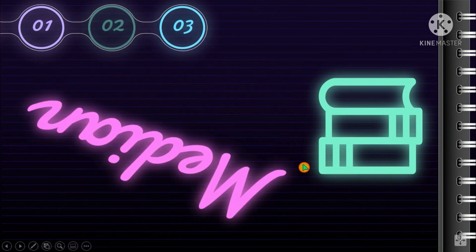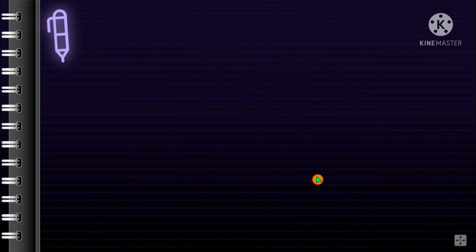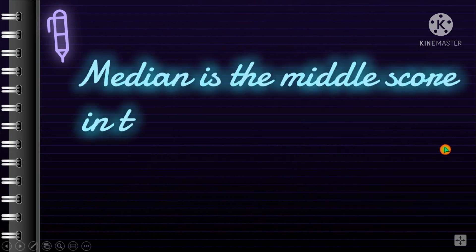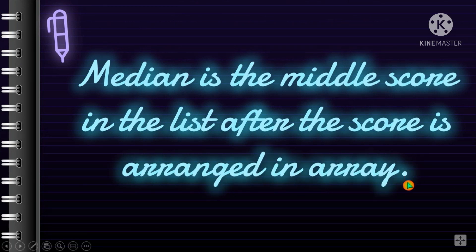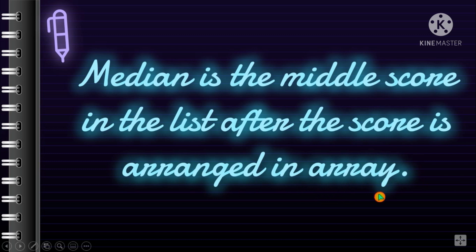Next, let's talk about the median. The median is the middle score in a list after the scores are arranged in array form. Array means you have to arrange your raw data in ascending or descending order. Before finding the median, your data must be arranged — from lowest to highest or highest to lowest. Either way is fine because the median will be the same.